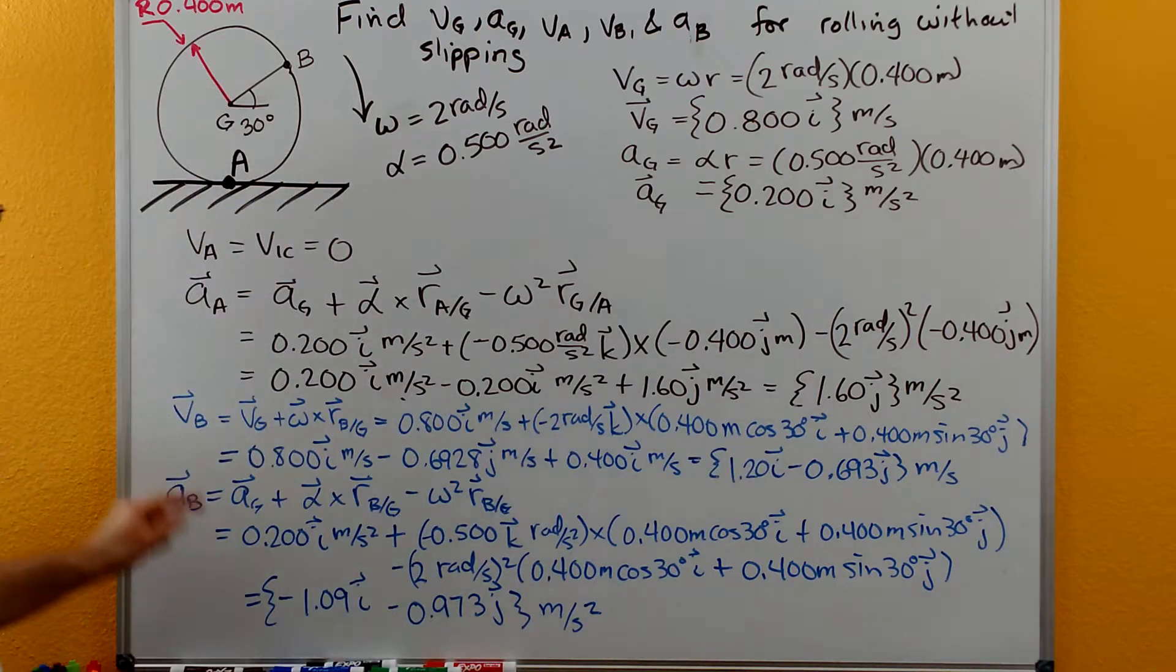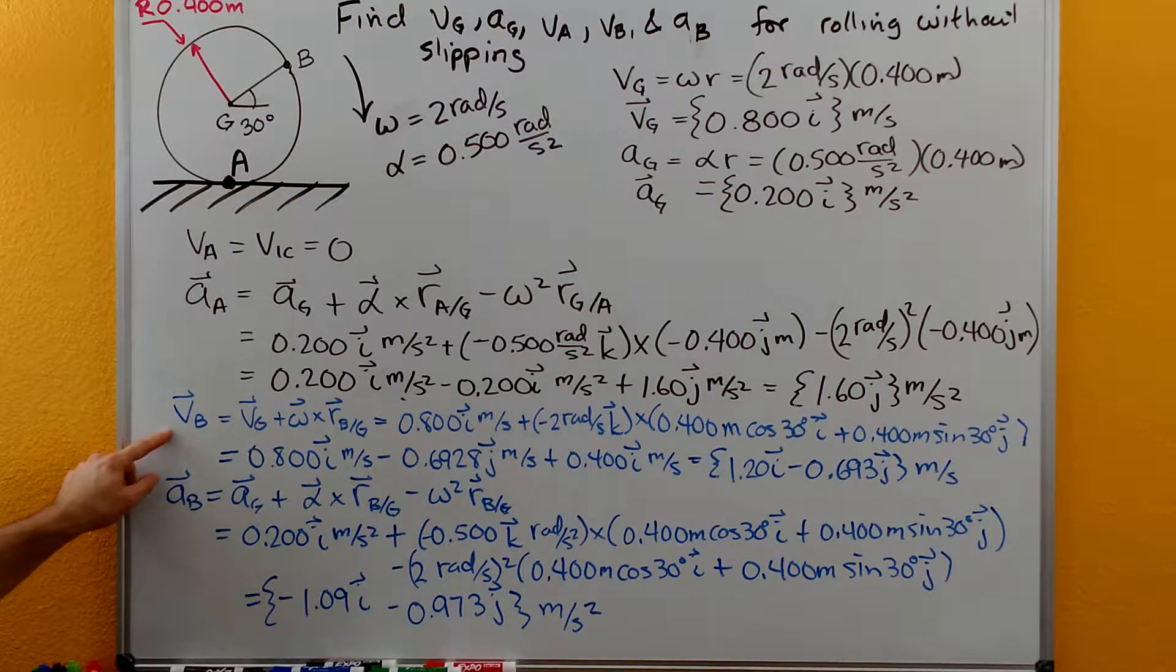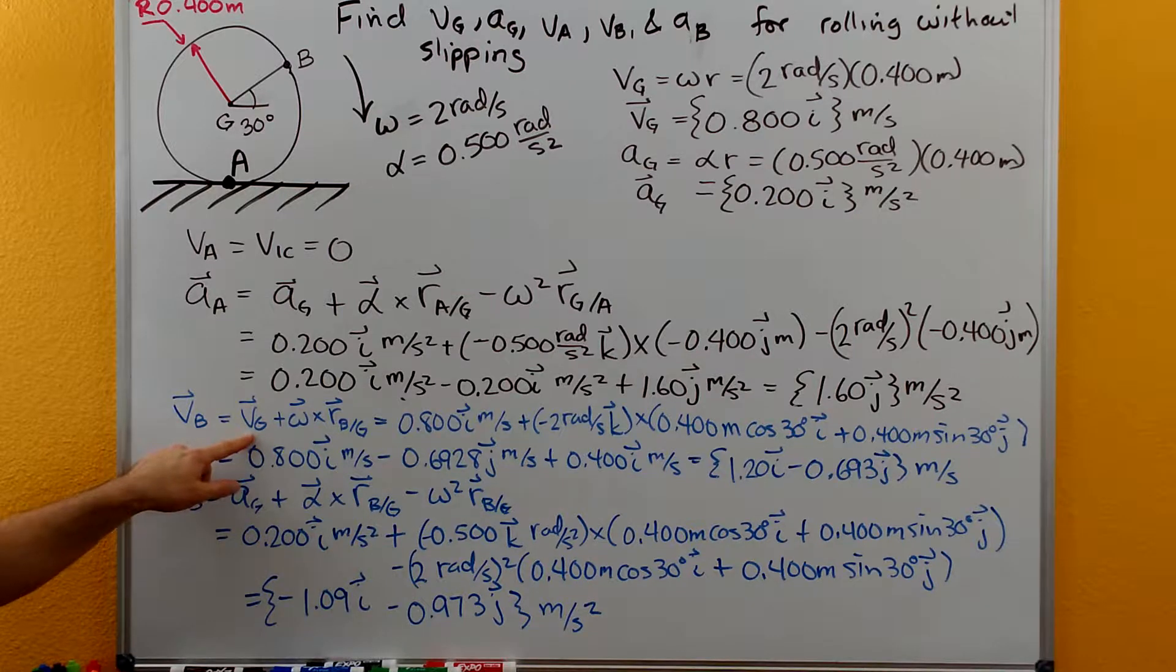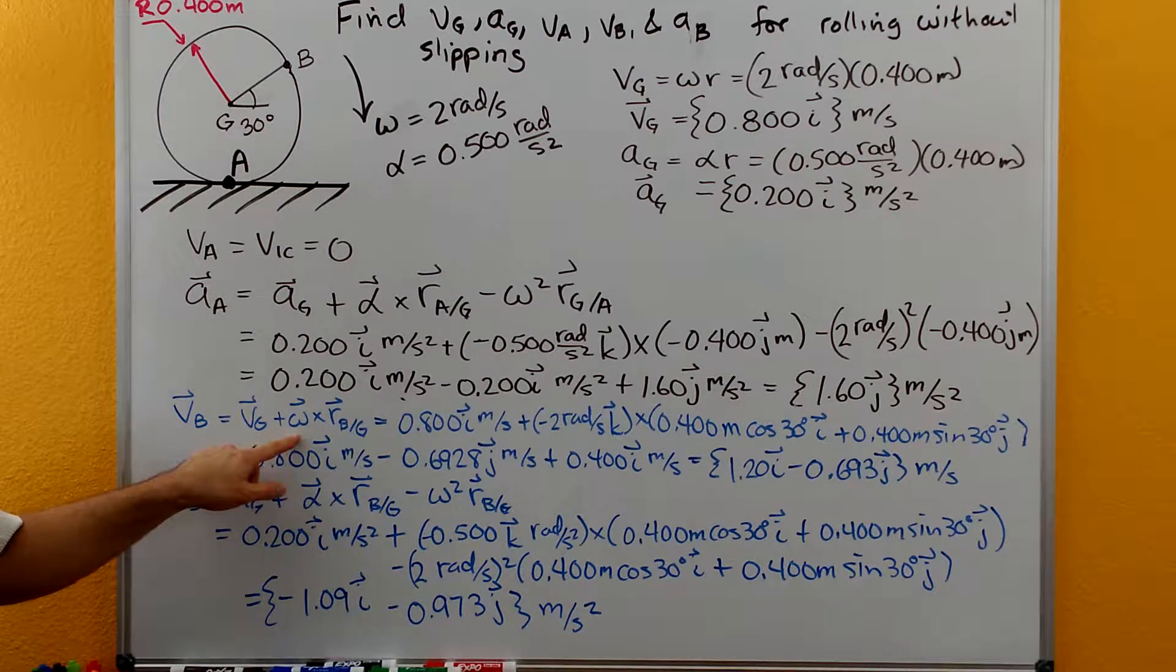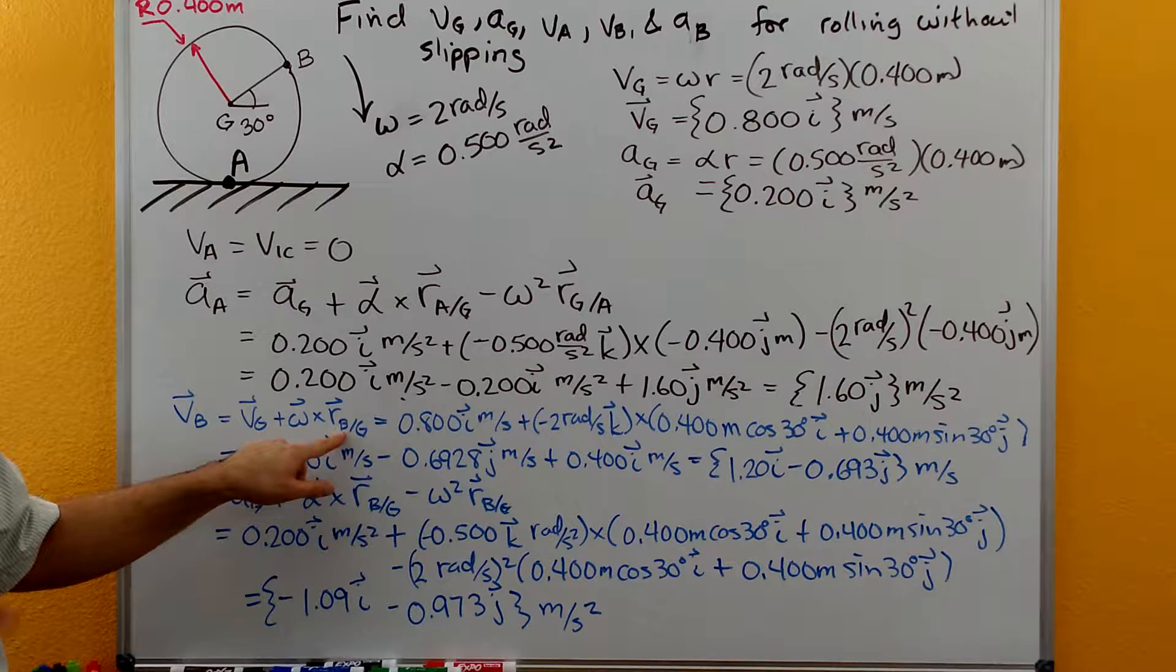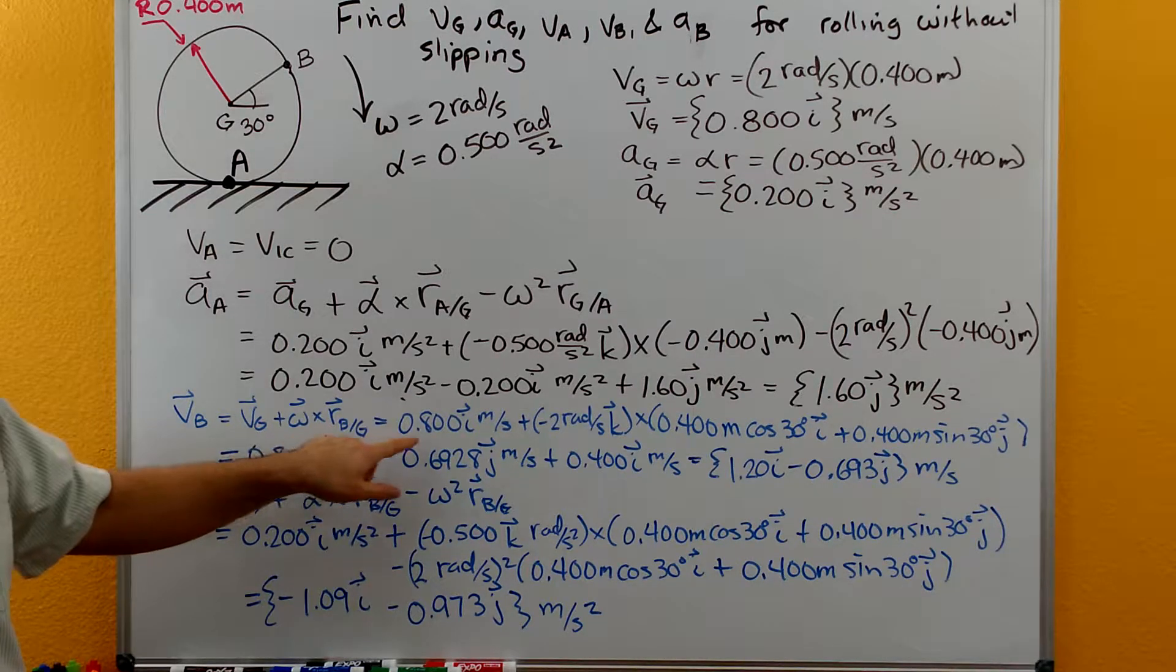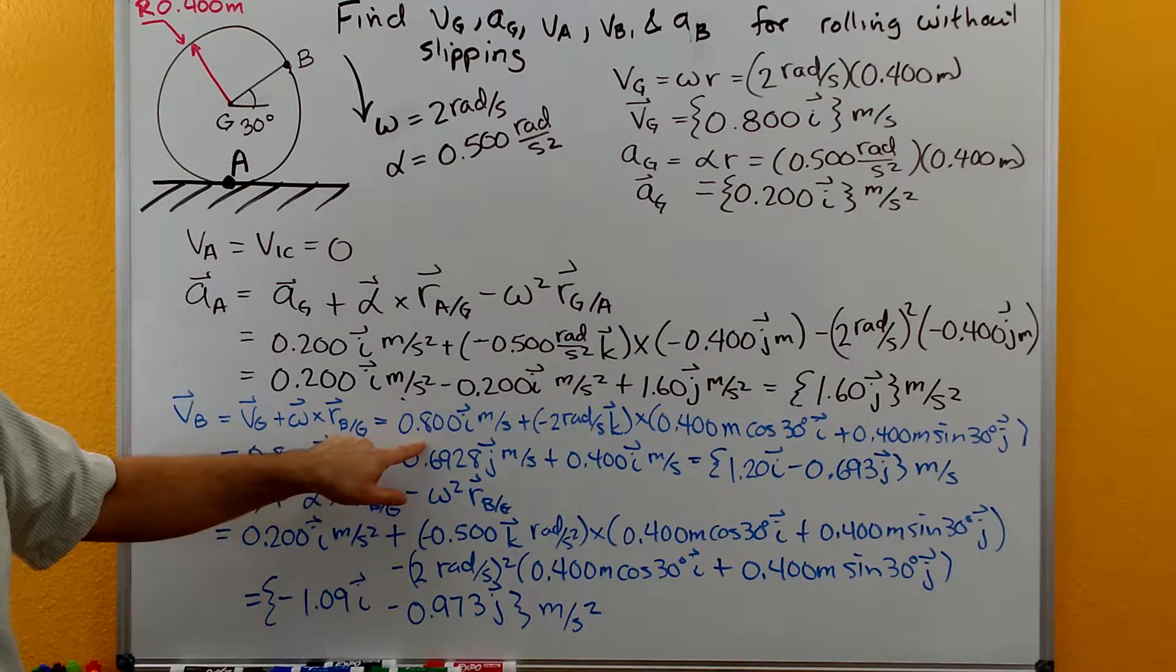So velocity at B we can develop this as the velocity at the center of gravity plus omega cross the position vector that goes from G out to B. So here's our equation.